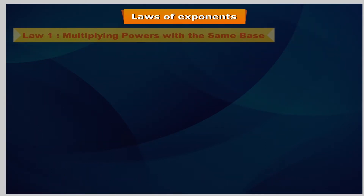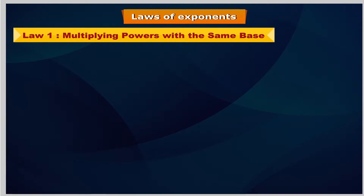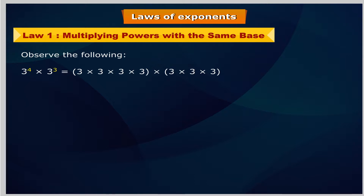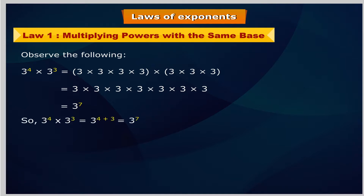Law of Exponents. Law 1: Multiplying powers with the same base. Observe the following: 3 to the power 4 multiplied by 3 cubed equals 3 multiplied by 3 multiplied by 3 multiplied by 3, within brackets, multiplied by 3 multiplied by 3 multiplied by 3, within brackets, equals 3 to the power 7. So 3 to the power 4 multiplied by 3 cubed equals 3 to the power 4 plus 3, equals 3 to the power 7.